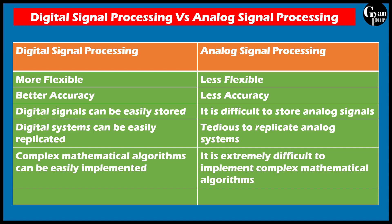We can easily replicate digital signals or digital systems, whereas replicating analog systems is a tedious task. Complex mathematical algorithms can be easily implemented using digital signal processing, whereas it is extremely difficult to implement complex mathematical algorithms in analog signal processing. Digital signal processing can be easily upgraded and it is difficult to upgrade ASP.